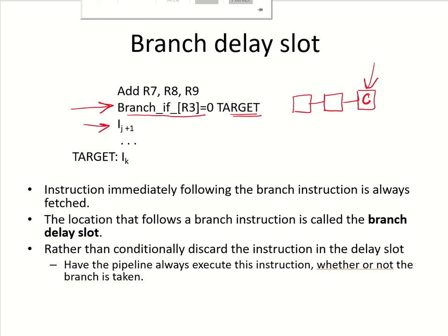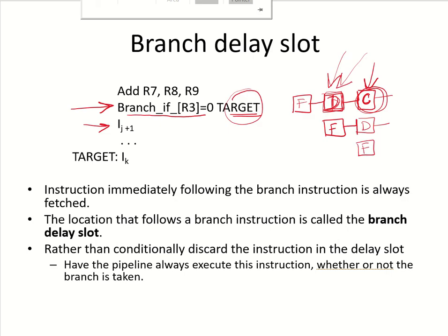In the meantime, instruction i(j+1) has already been fetched and it is in the decode stage. If somehow we can bring the comparison part also to the decode stage — we know we can bring the computation of the target address to the decode stage by including an adder — the target address is being computed in the decode stage. But if the comparison can also be done in the decode stage, then we will not be having a penalty of two clock cycles.